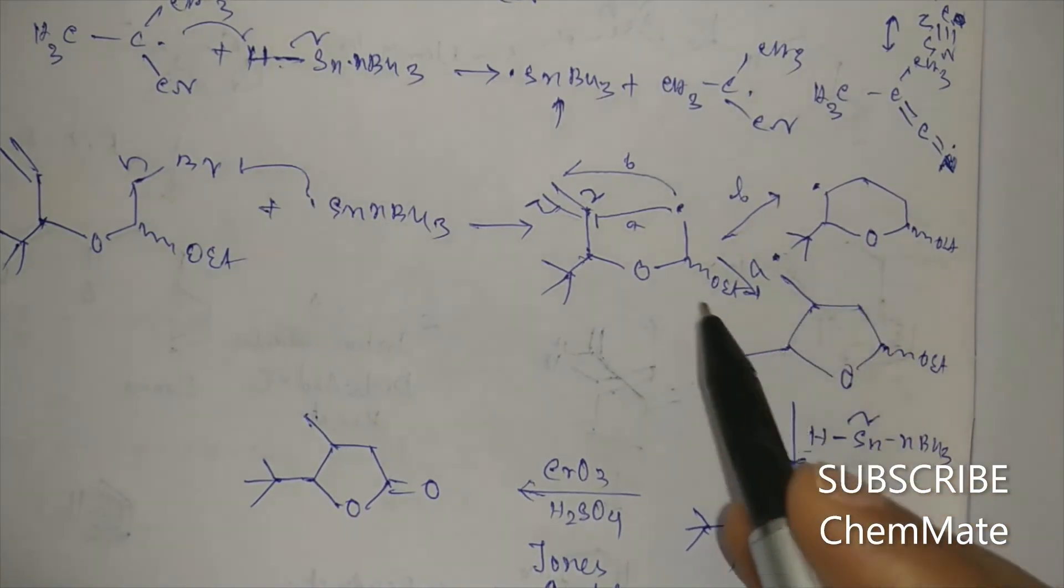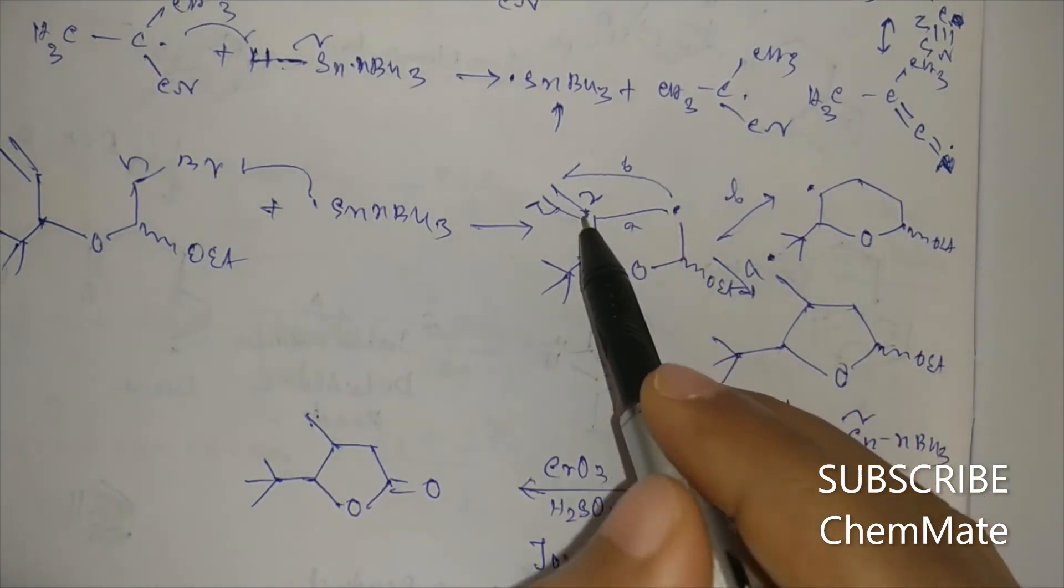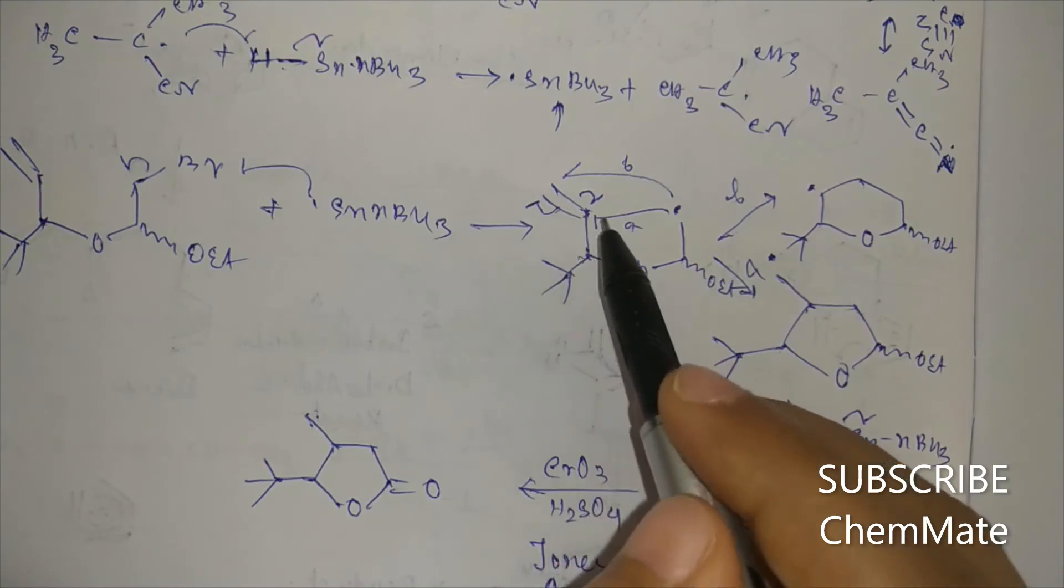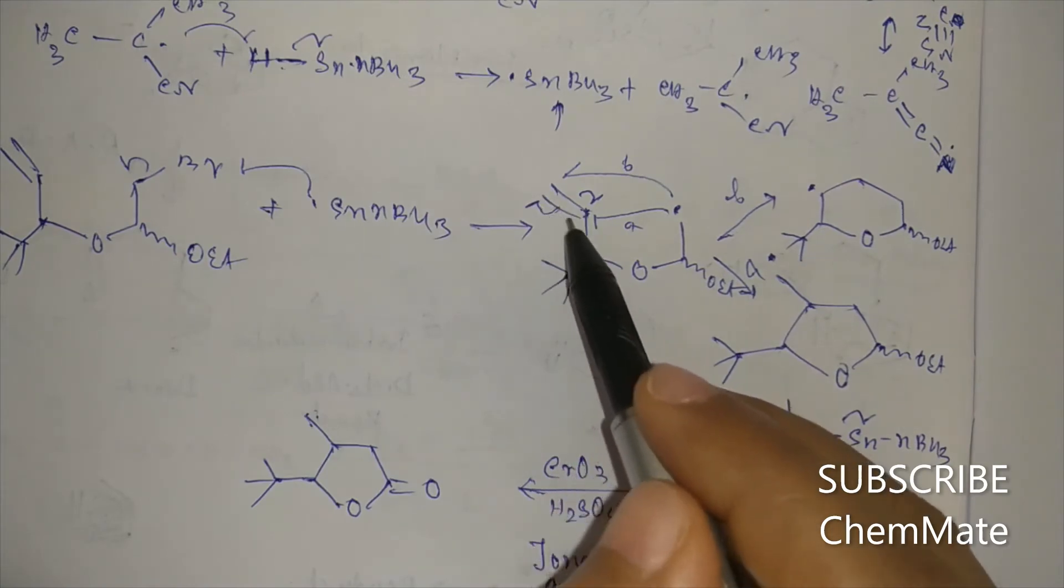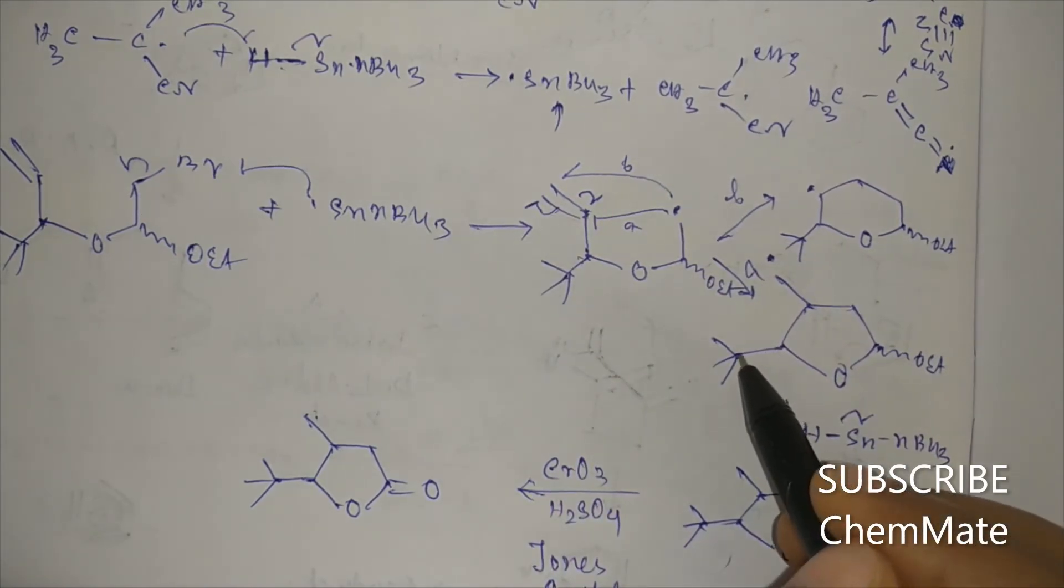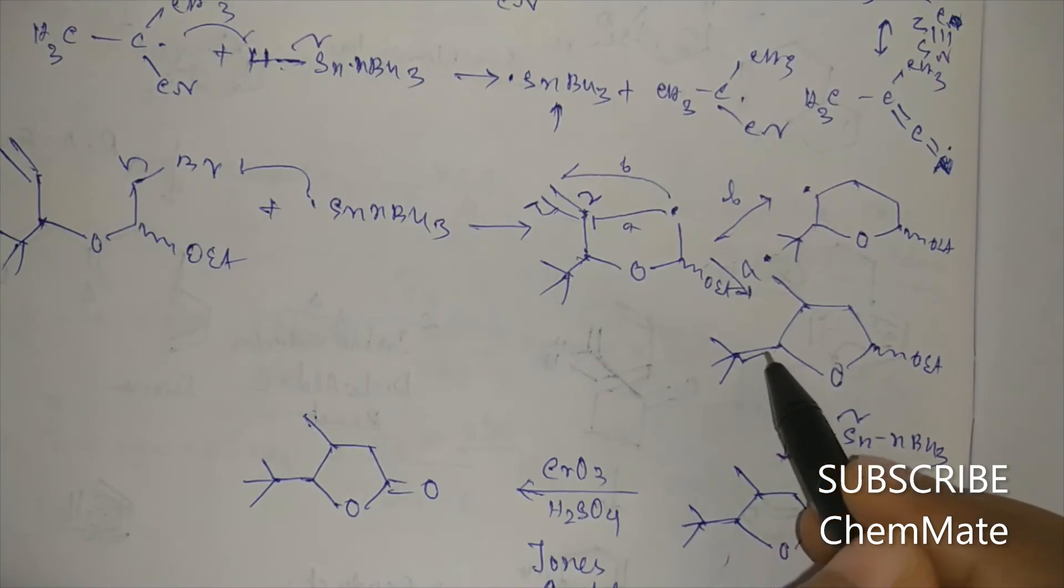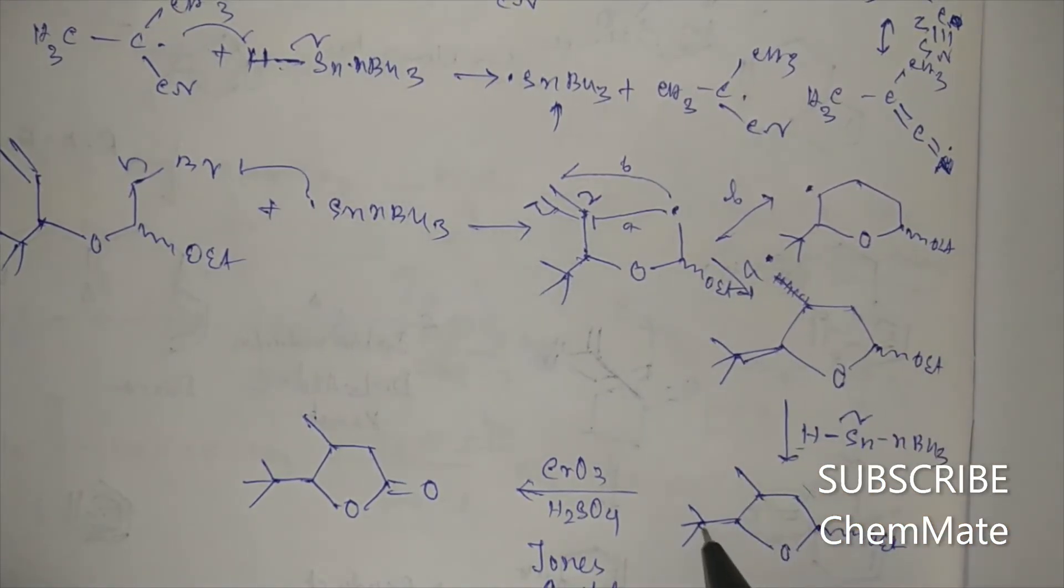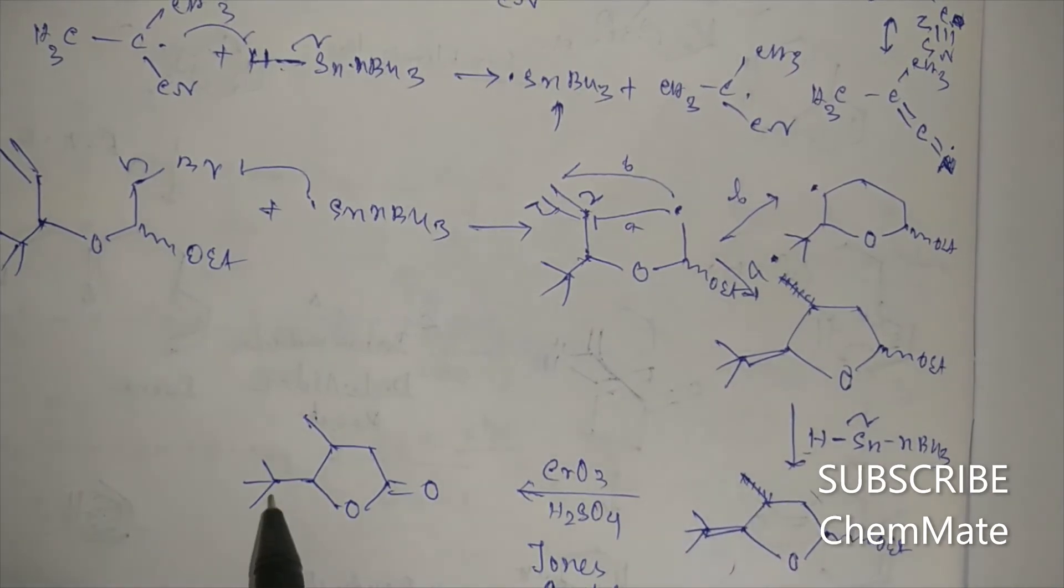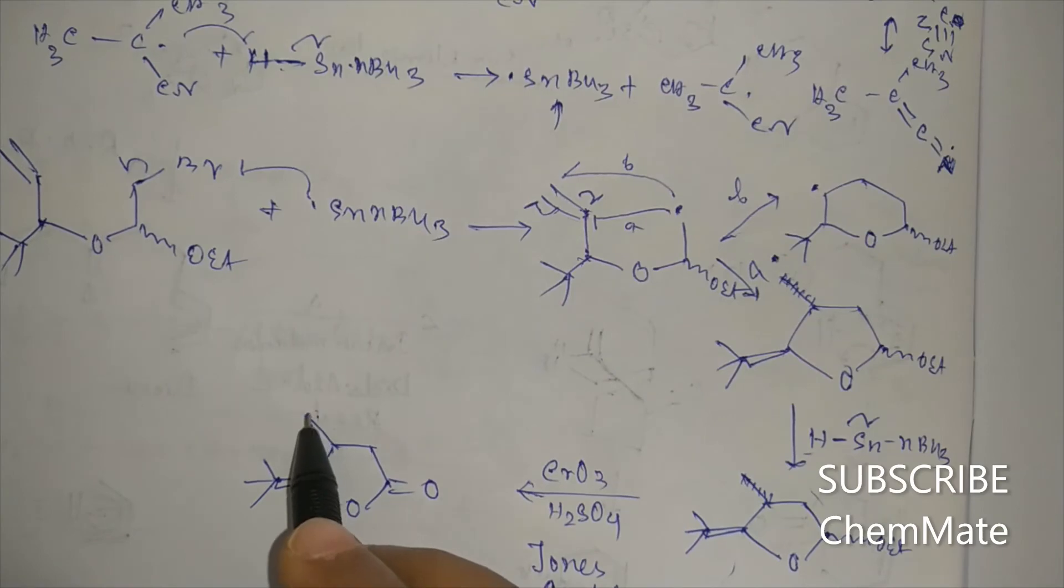So in the 5-member ring, when the ring closing reaction will occur, when it will attack, this group will go anti to this group. That is, if it is above the plane, then it will go below the plane. So if you draw this above the plane, then it will go below the plane. Again, if you draw this above the plane, it will go below the plane. So if it is above, it is below.